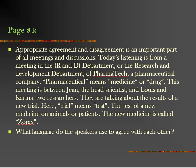I want you please to open page 34. Appropriate agreement and disagreement is an important part of all meetings and discussions. Today's listening is from a meeting in the R&D department, or the Research and Development Department, of Pharmatech, a pharmaceutical company. Pharmaceutical means medicine or drug. This meeting is between Jane, the head scientist, and Lewis and Karina, two researchers. They are talking about the results of a new trial. Here, trial means test — the test of a new medicine on animals or patients. The new medicine is called Zorox.